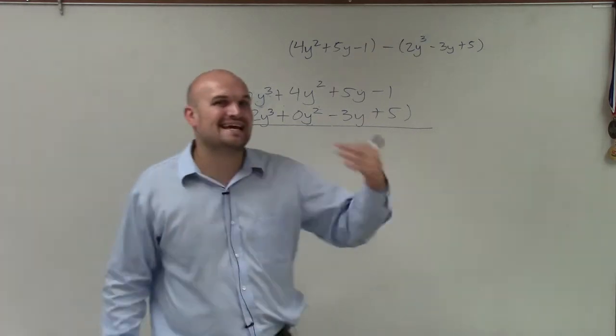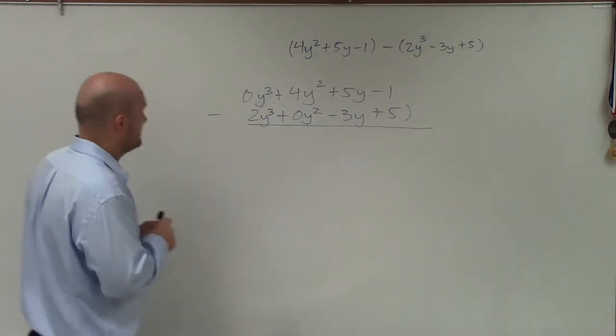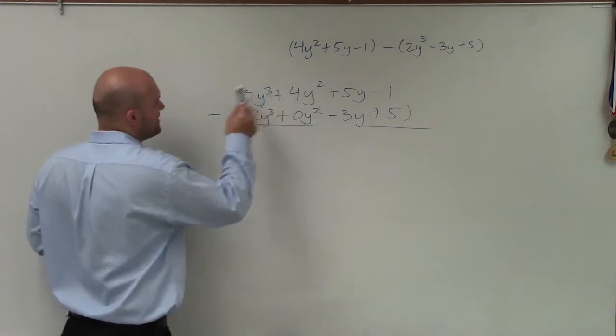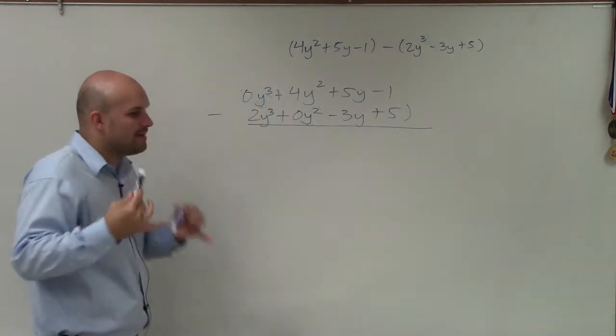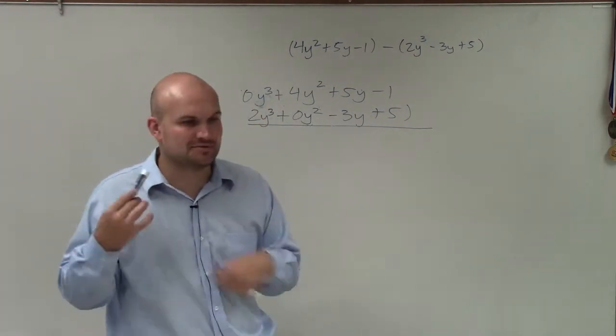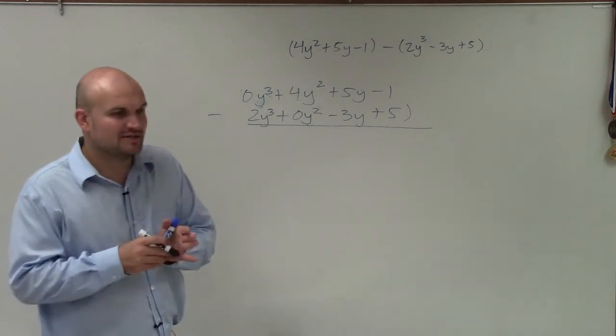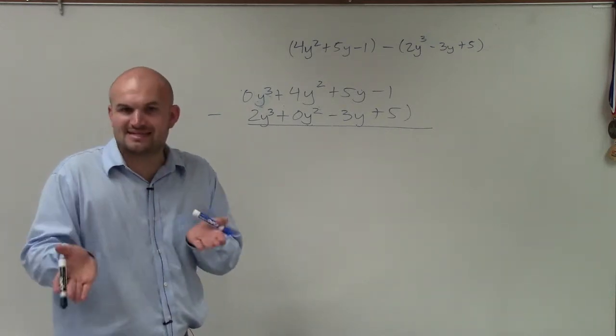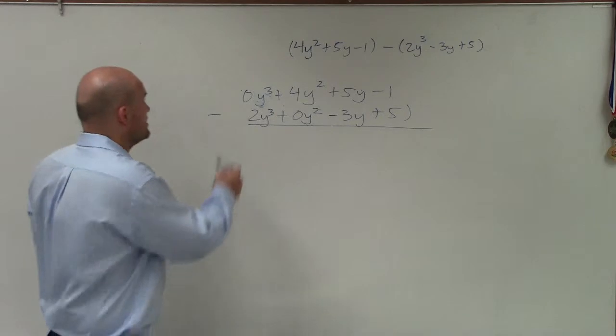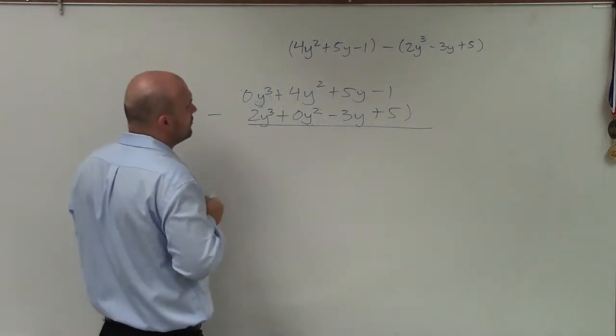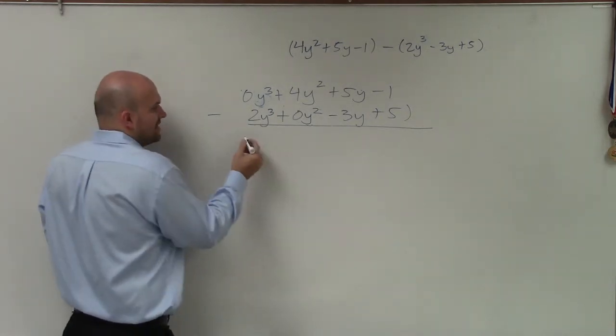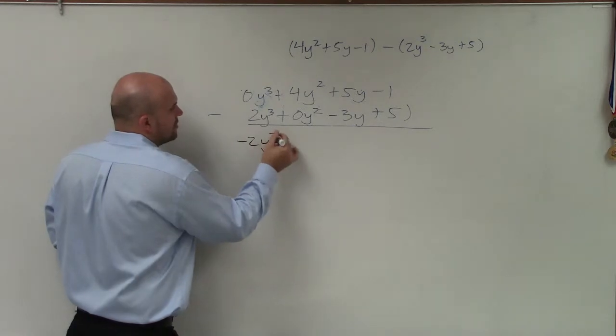Now when subtracting, I'm going to say it out loud. 0y³ minus 2y³. Remember, when we're subtracting monomials, the variable remains the same. We're just subtracting the coefficients. So 0 minus 2 is just negative 2, right? So this becomes -2y³.